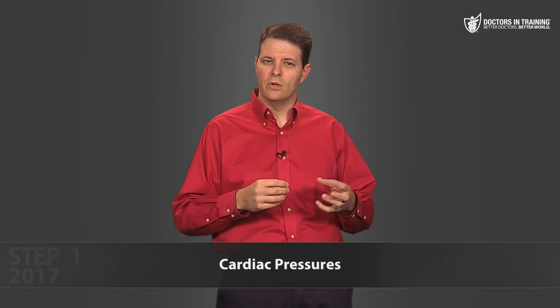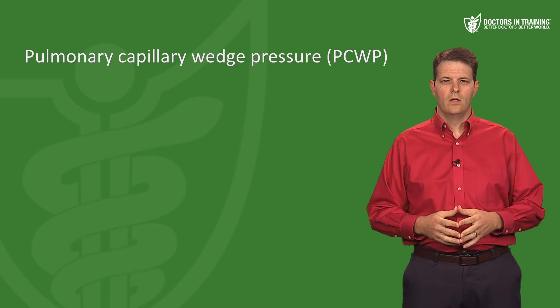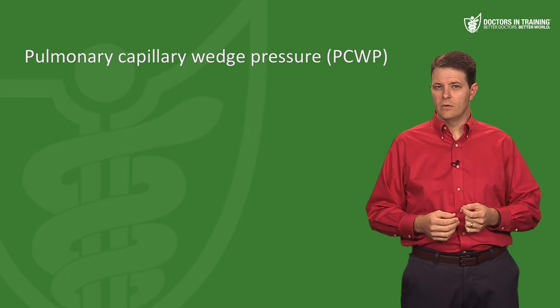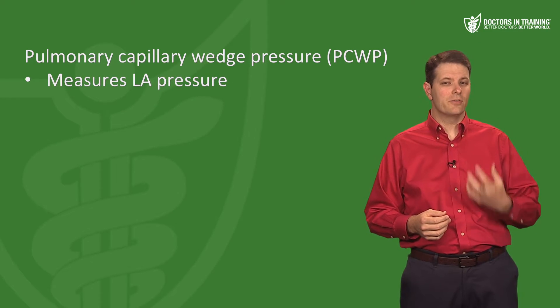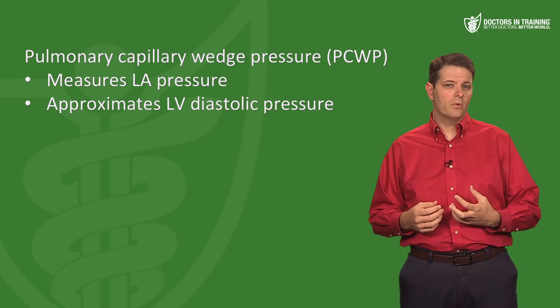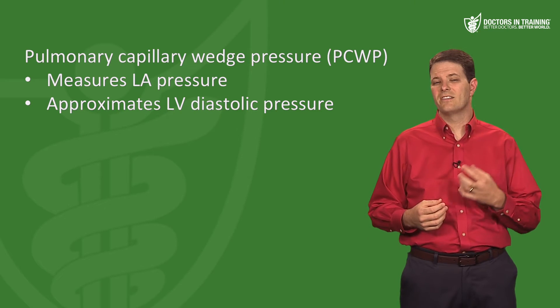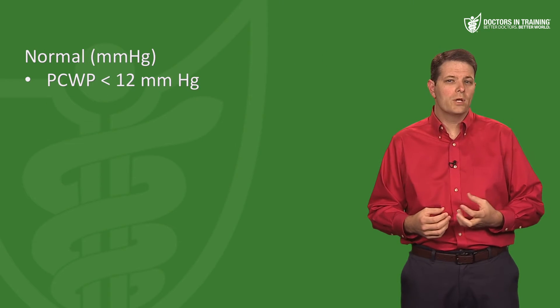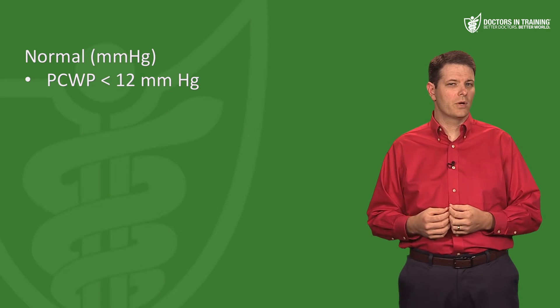There's a pressure-sensing device in the tip of the Swan-Ganz catheter just beyond the balloon. When the balloon is inflated, you measure the pressure distal to it. That pressure is not coming from the right side of the heart because your balloon has blocked it — essentially creating a little balloon embolus. So you're measuring the pressure in the left atrium, which approximates the left ventricular diastolic pressure.